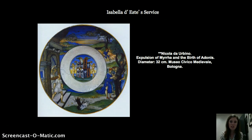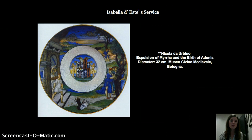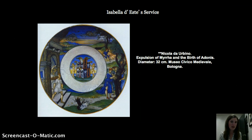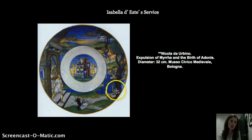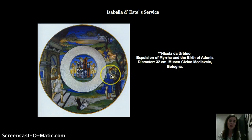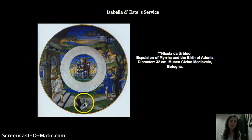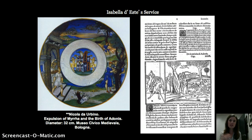Here we can see another dish — the expulsion of Myrrha and the birth of Adonis. This story is about a daughter who falls in love with her father and creates a plot for them to have an intimate relationship. When he discovers it is his daughter, he casts her out, and she is pregnant. She's turned into a myrrh tree — the stories of Ovid have to do with metamorphosis or change. She changes into the tree, but we can still see her head, and out comes the baby Adonis, who Venus will fall in love with. Again Isabella's emblems are included on the dish, and we see that connection between text and image.